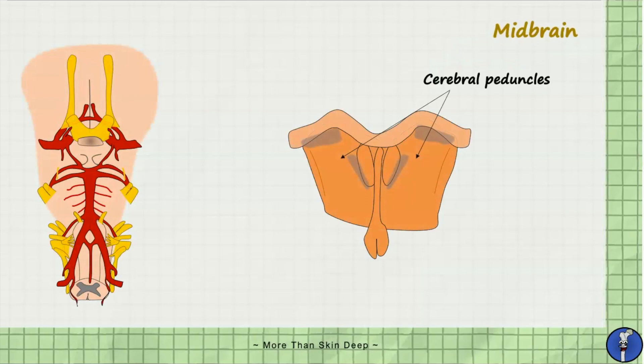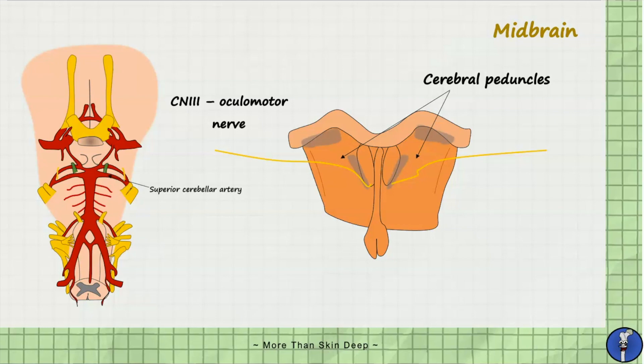Starting with the midbrain, the third cranial nerve — the oculomotor nerve — originates from the anterior midbrain between two stalks known as cerebral peduncles. The space between these two cerebral peduncles is known as the interpeduncular fossa. Importantly, the oculomotor nerve has to pass between the superior cerebellar artery and the posterior cerebral artery to enter the cavernous sinus. These arteries form the circle of Willis, which is a circulatory anastomosis that supplies the brain.